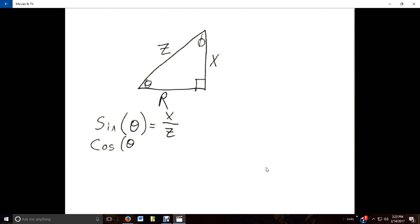Cosine of theta would be adjacent to the theta is r, and the hypotenuse is z. Tangent of theta would be, opposite would be x, and the adjacent would be r.